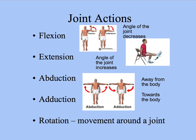In order to understand the different types of movements produced by muscles, we need to know the five different types of joint actions. The first is flexion. Flexion is where the angle at the joint decreases. As you can see at the elbow joint, as the arm is brought upwards, the angle is decreased, so therefore it must be flexion.